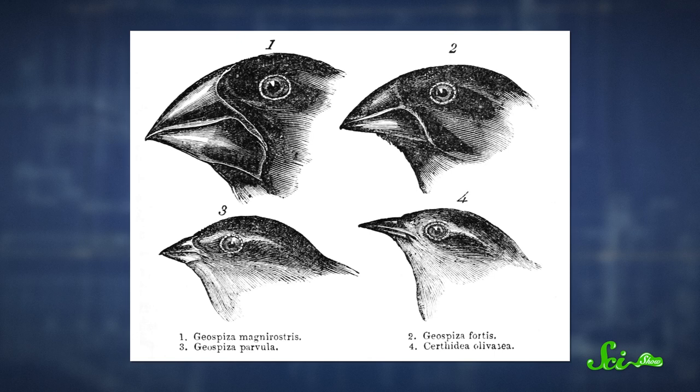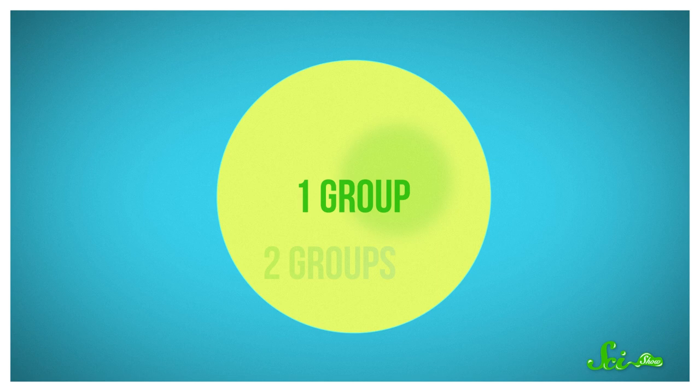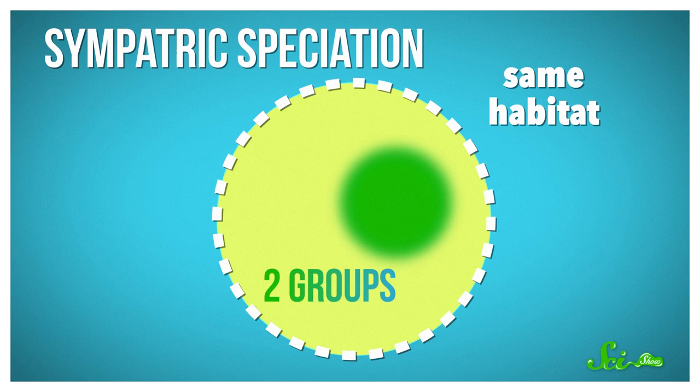Biology is full of examples of allopatric speciation, like the different species of squirrel on the north and south rims of the Grand Canyon, or finches isolated on different islands in the Galapagos. But there's not always a clear physical barrier that separates one species into two. Sometimes a species splits even though the two diverging groups are still living side by side in the same habitat. That's sympatric speciation.